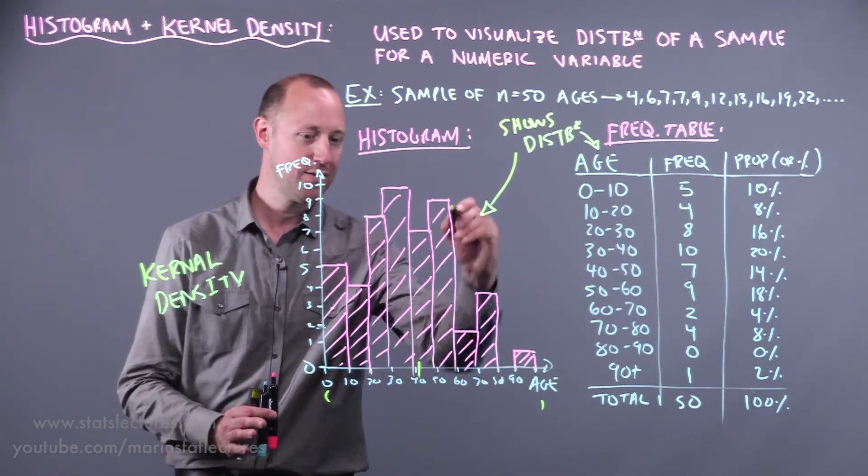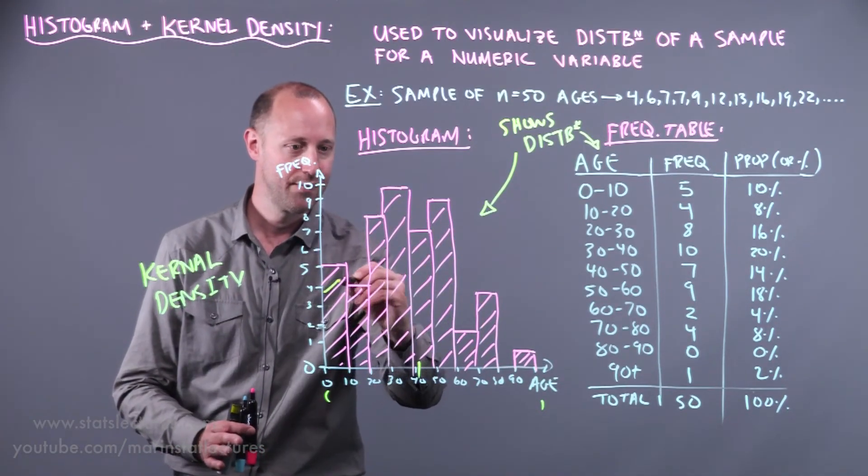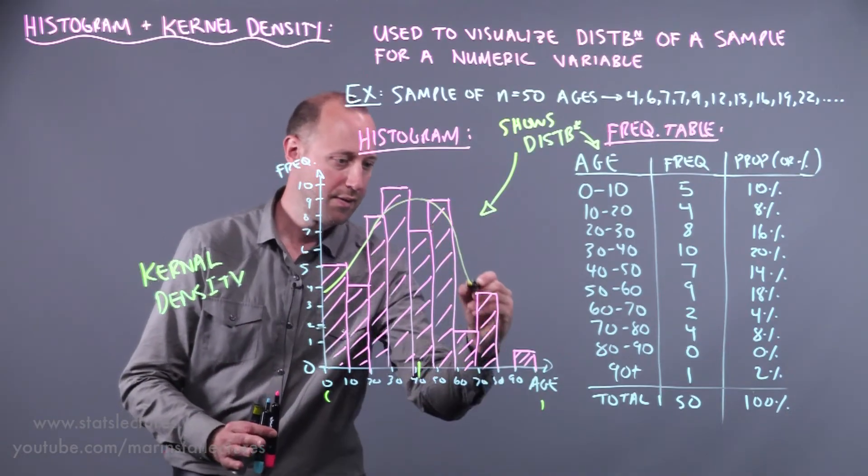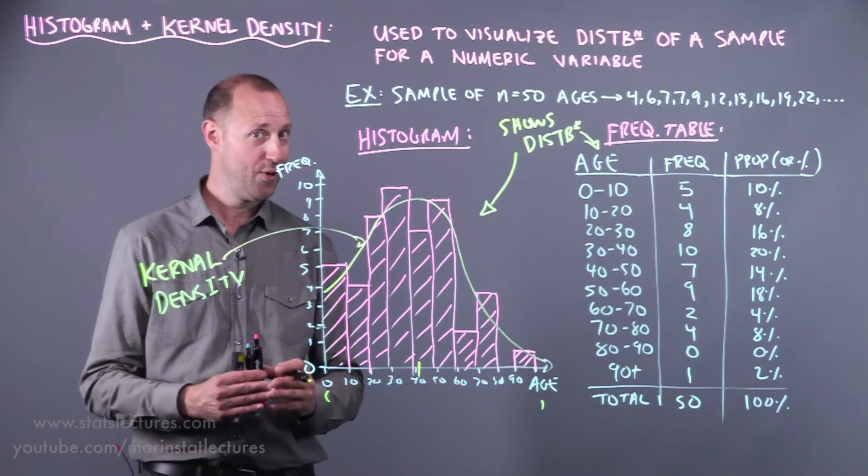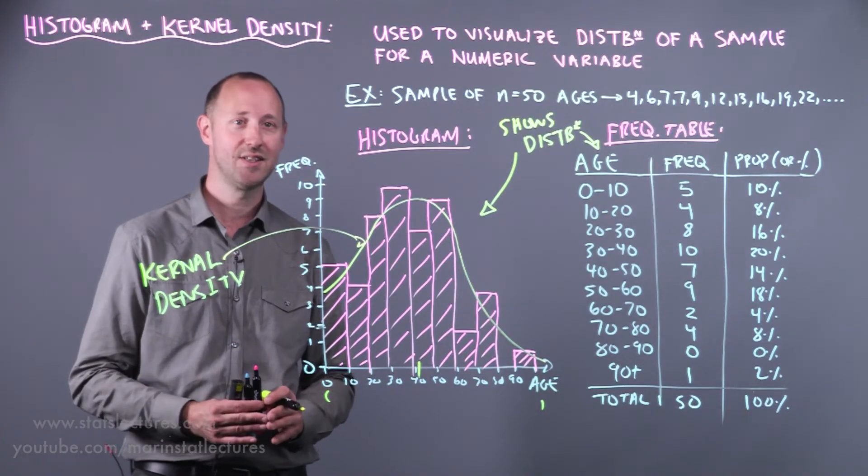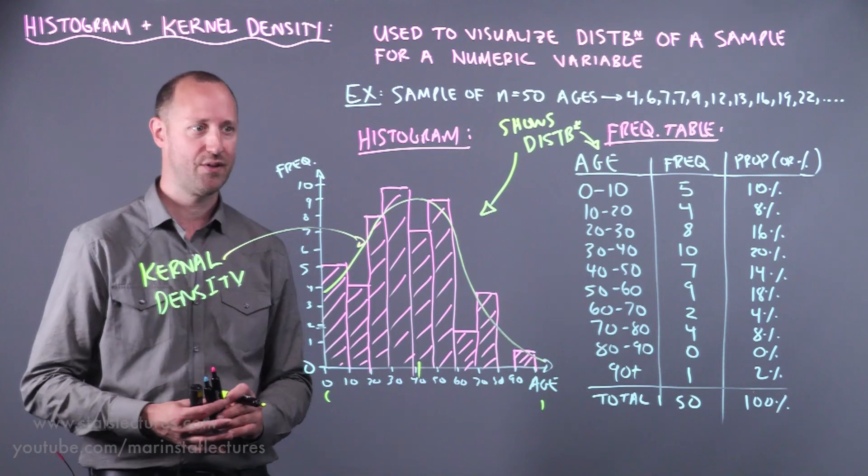So rather than bumping around so much it tries to smooth this out. A way to think about it without getting into the technical details of it. Is it's sort of a smoothed out version of the histogram.